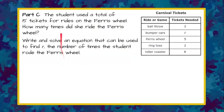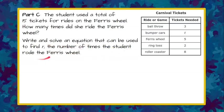Part C: The student used a total of 15 tickets for rides on the Ferris wheel. How many times did she ride the Ferris wheel? Write and solve an equation that can be used to find R, the number of times the student rode the Ferris wheel. Please pause now and come back and hit play when you're done.